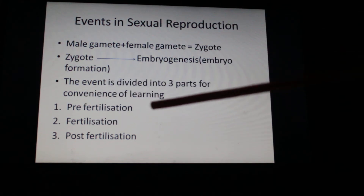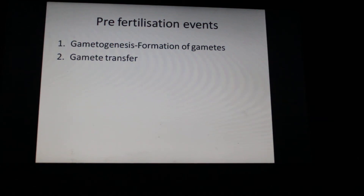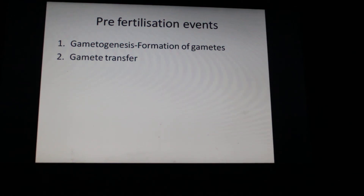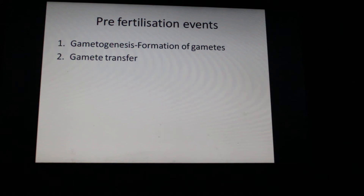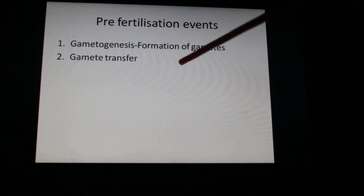The three parts are: pre-fertilization, fertilization, and post-fertilization. Pre-fertilization events are those which occur before fertilization. Fertilization is when the male gamete and female gamete fuse. First, in order to make the two gametes fuse, you should have gametes — so we will learn how gametes are formed — and then how gametes meet, which is gamete transfer.